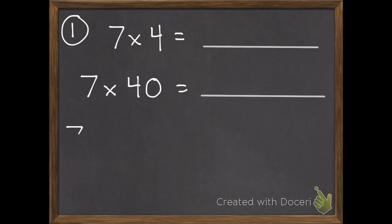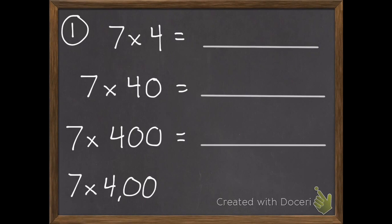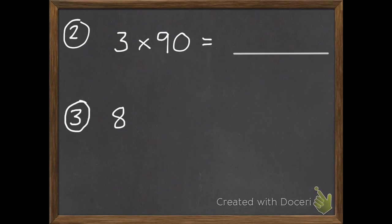Here's your first problem that we'll check in class. Finish this pattern: seven times four, seven times forty, seven times four hundred, and seven times four thousand. And your last two problems: solve three times ninety, and eight times four hundred.